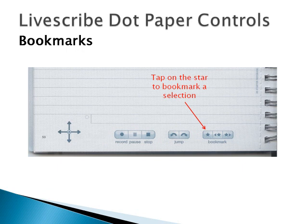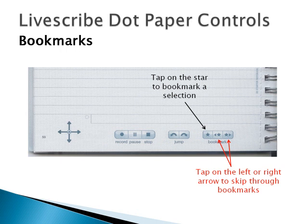If you want to come back to a section of the recording, you can tap on the star to place a bookmark, and then use the left or right arrow to skip through the different bookmarks when reviewing the audio.